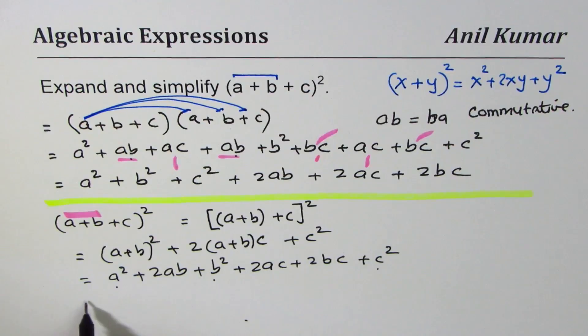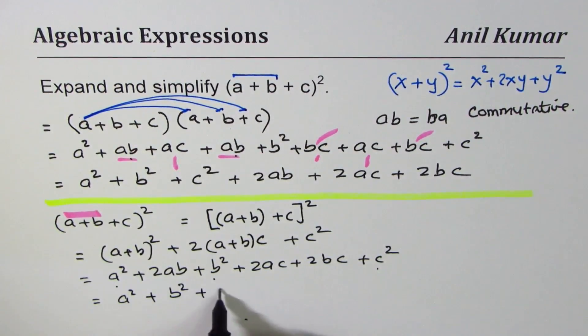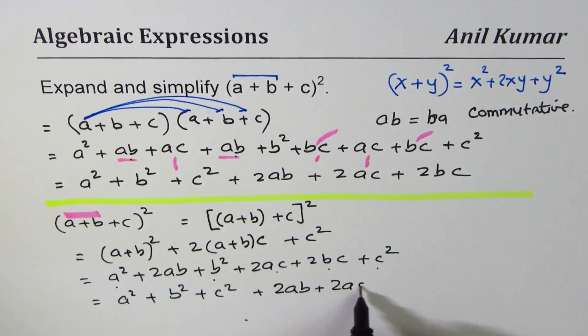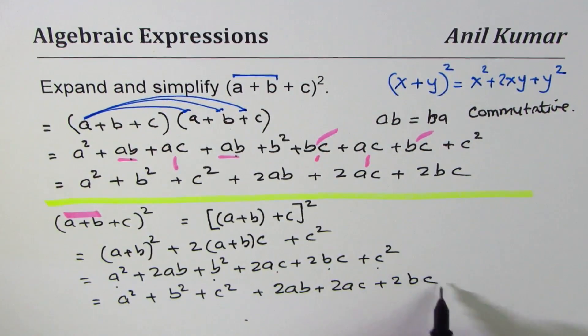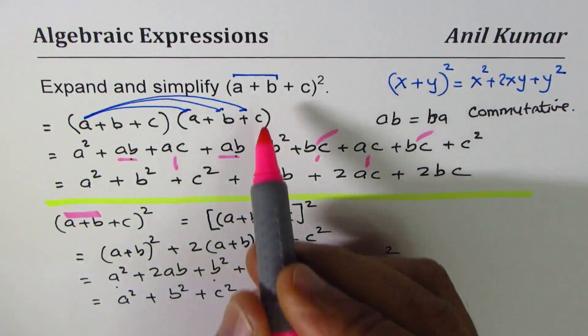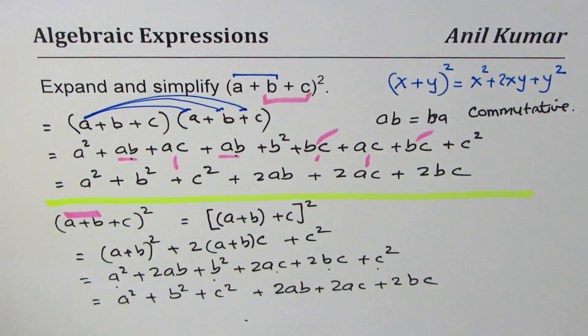So again you see we have got these three terms I could club them together: a² + b² + c², and we have the other three terms, we don't even have to club them, so we have 2ab + 2ac + 2bc. This seems to be complicated to start with, however it turns out to be simpler if you really see it. Anyway, so these are two ways you could always do it.